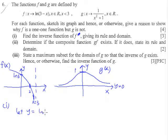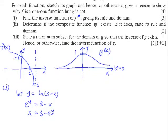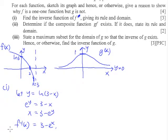We let y equals ln(3 minus x). Anti-logging both sides, we have e to the power y equals 3 minus x. Making x the subject, we get x equals 3 minus e to the y. Therefore, f inverse of x will be 3 minus e to the x. For the domain of f inverse, which is the range of f: the range of f is from negative infinity to positive infinity, so the domain of f inverse is x is all real numbers.